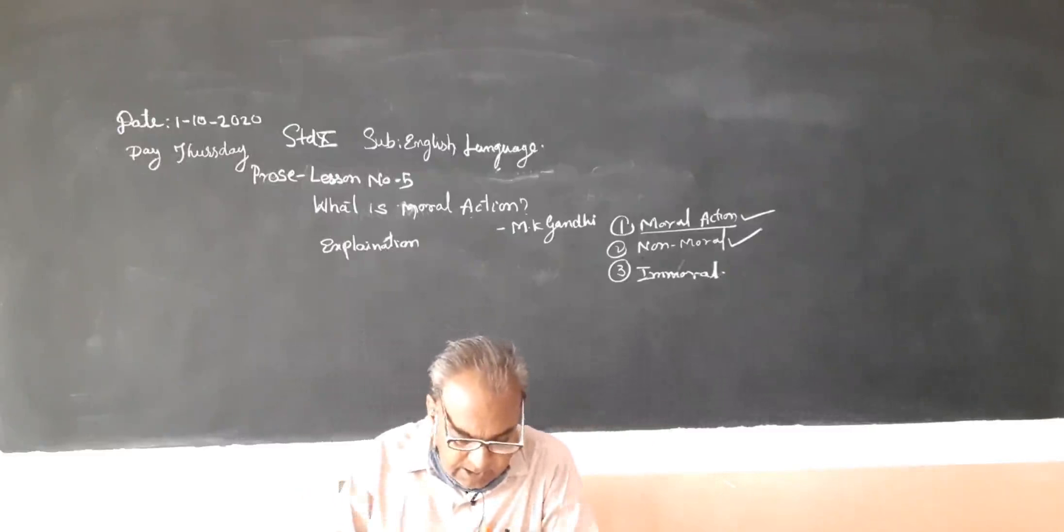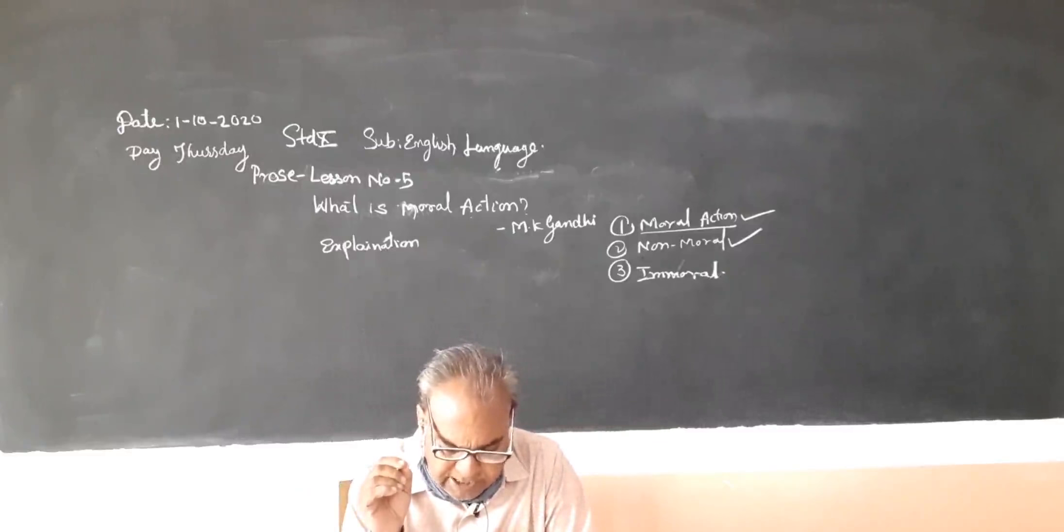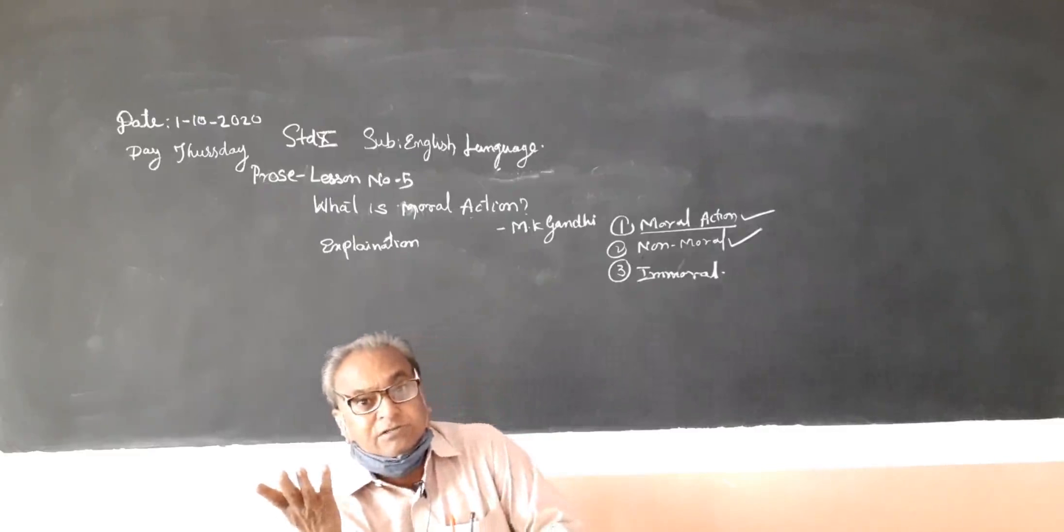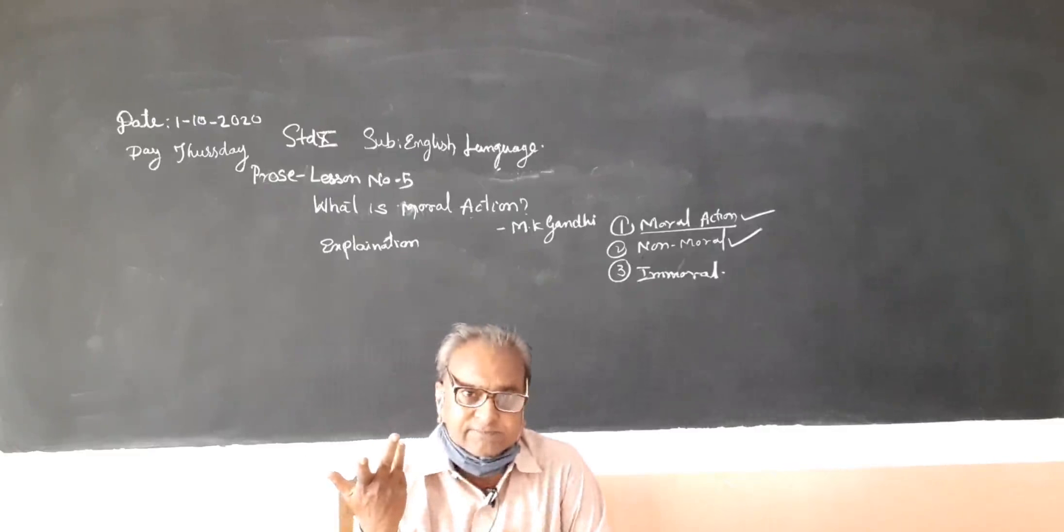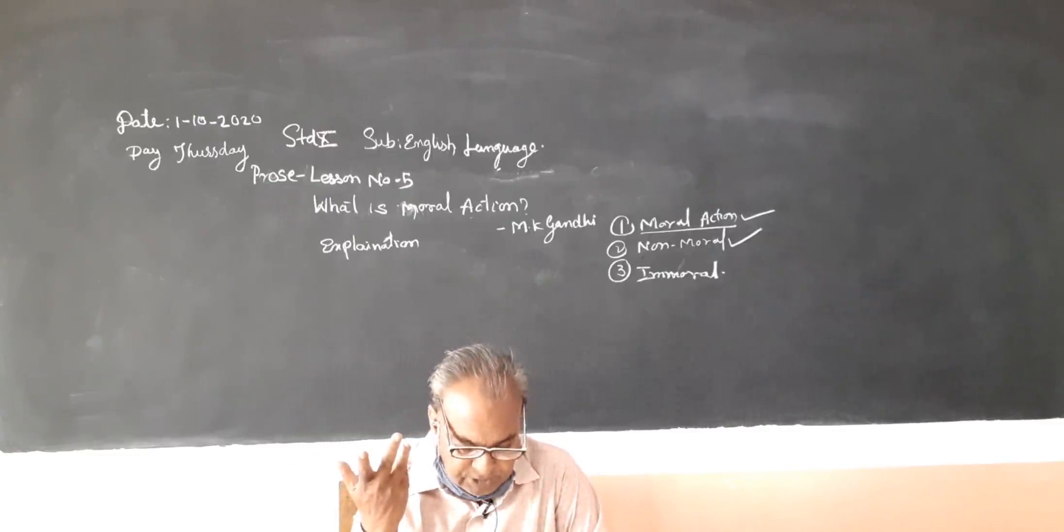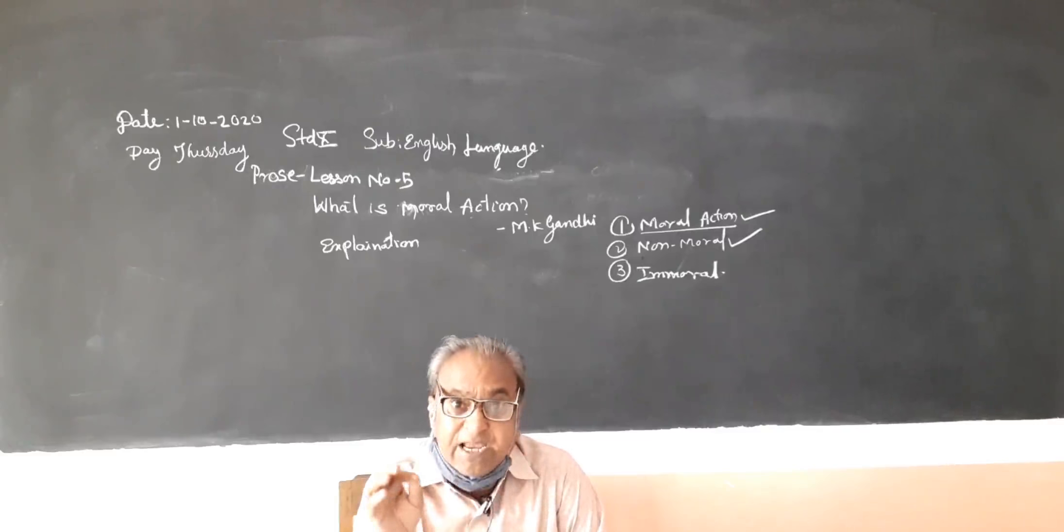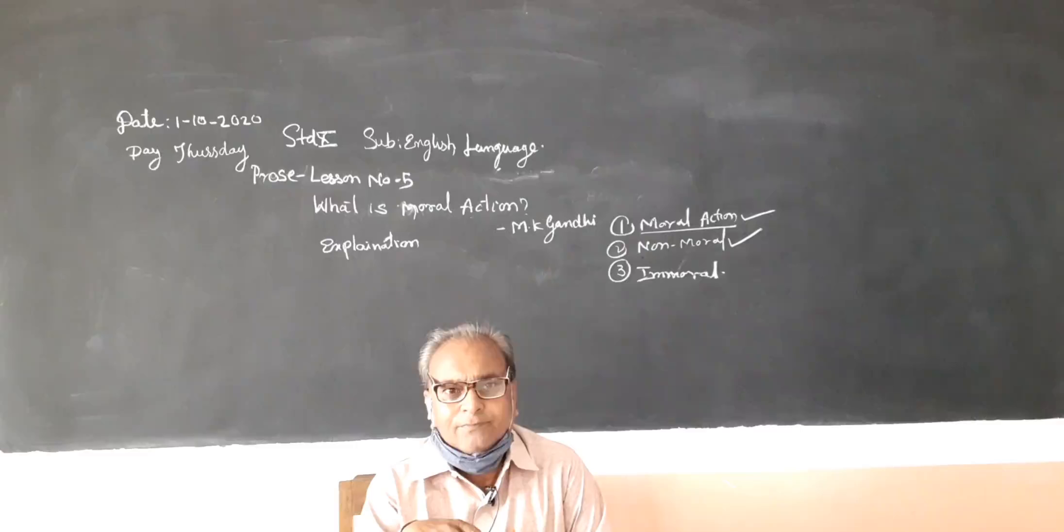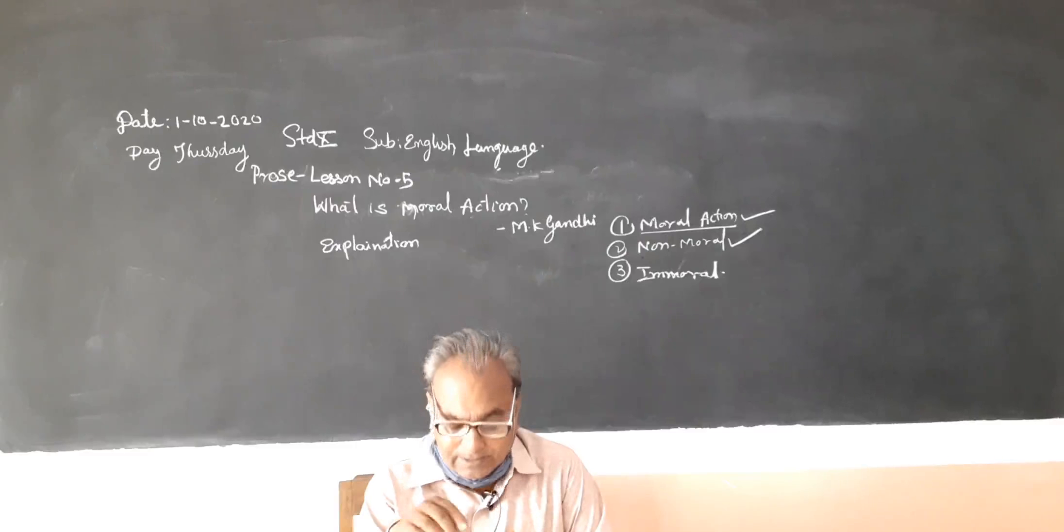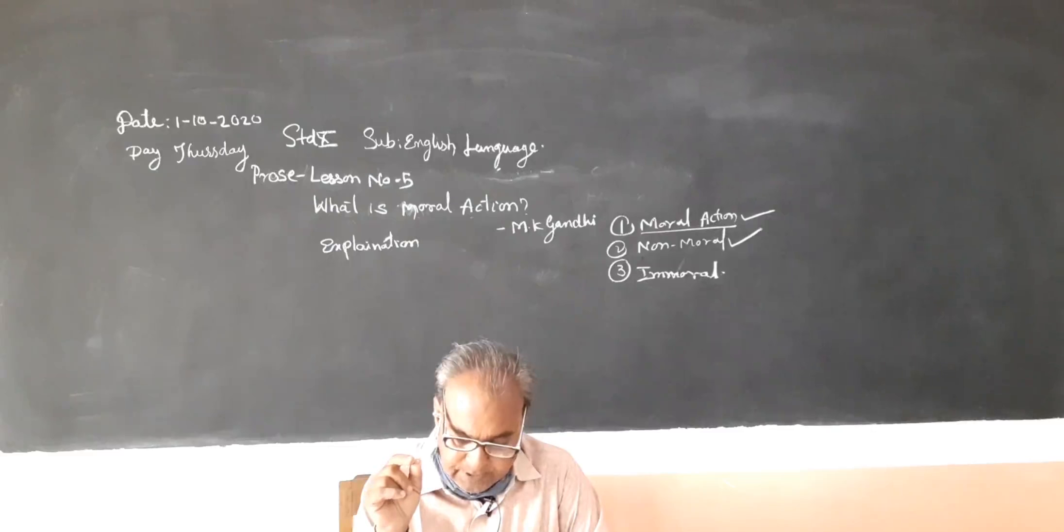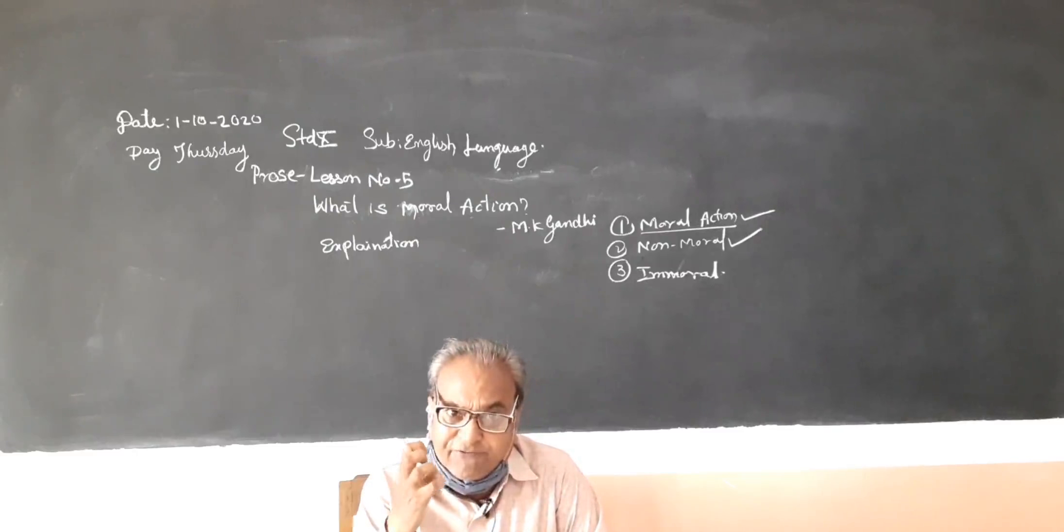In this lesson, Gandhiji discusses what makes an action moral. He tries to answer the question with several examples he has given. Firstly, for an act to be moral, it must be one that is done from our own free will. If you want to have a moral action, it must be done by your free will.